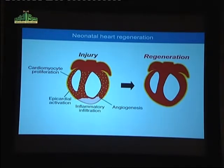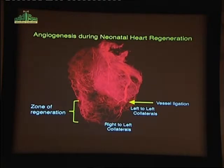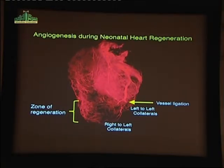We're currently trying to understand if that's a mechanical or a biochemical signal. The culmination of these events is complete regeneration of the heart, and each of these events is blocked in the adult heart. Here we've monitored new blood vessel formation by casting the complete vasculature in the heart following injury. If we induce a coronary artery ligation here, this entire region of the heart would die. During the neonatal period, there's massive formation of new blood vessels from multiple directions.